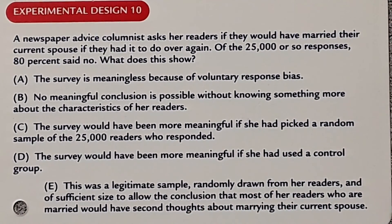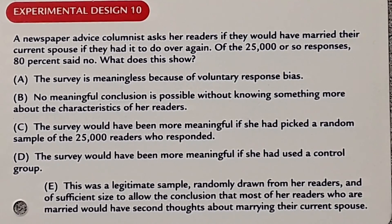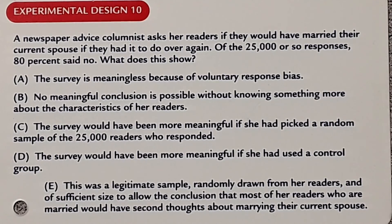A newspaper advice columnist asked her readers whether they would have married their current spouse if they had to do it all over again. Of approximately 25,000 responses, 80% said no. The answer choices ask whether this shows voluntary response bias, requires more information about readers' characteristics, would be more meaningful with a random sample of respondents, would need a control group, or is a legitimate sample of sufficient size to conclude most readers would have second thoughts.